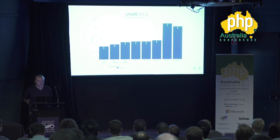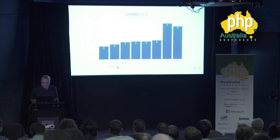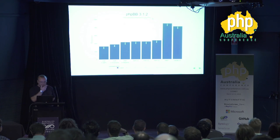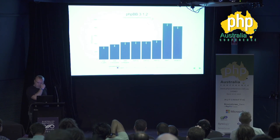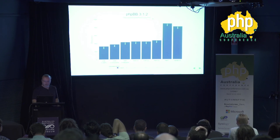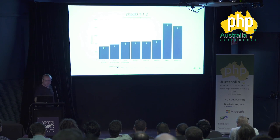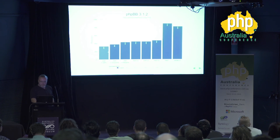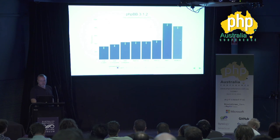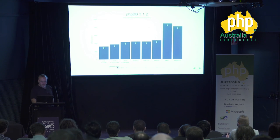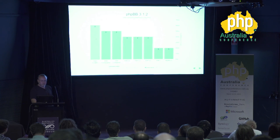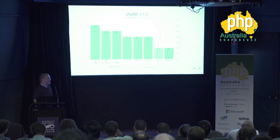PHP BB — a very popular bulletin board package. Default install with one forum and one post — I went to that forum and viewed that post, and that's what I benchmarked. Again, the same progression: 5.3, 5.4, 5.5, 5.6, then a huge jump to PHP 7. PHP 7 is actually a bit faster than HHVM 3.5 on this one. At 20 concurrent requests, latency drops from 60 milliseconds on PHP 5.6 to 20 milliseconds on PHP 7 — pages are twice as fast after upgrading.